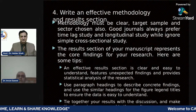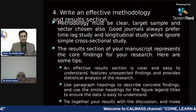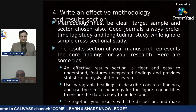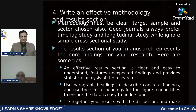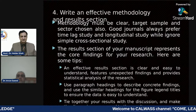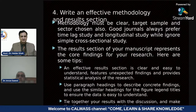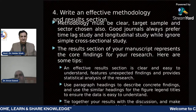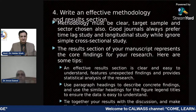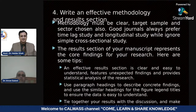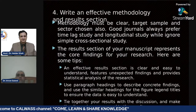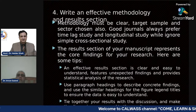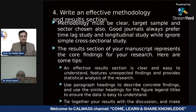The fourth step is to write an effective methodology and results section. Your methodology must be clear — clear target sample and sector. Most of the time we conduct research with a simple cross-sectional study, and there are questions about the common method variance problem. Good journals always prefer that you go for time-lag studies and longitudinal studies, through which the common method variance problem will be easily reduced.